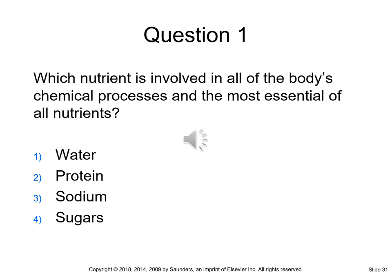Question: which nutrient is involved in all the body's chemical processes and is the most essential of all nutrients — water, protein, sodium, or sugars? The answer is water. The adult body is 50 to 69 percent water, and it is used in every body process including digestion, absorption, elimination, and secretion.